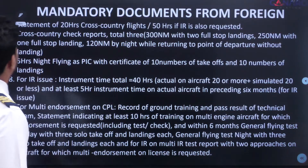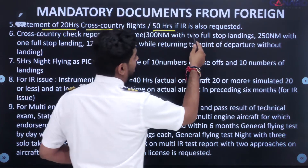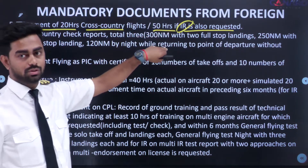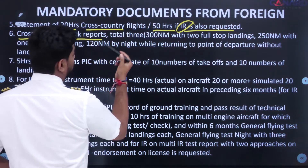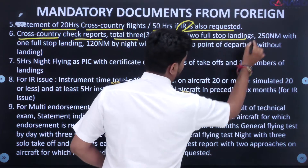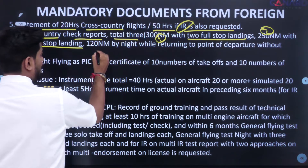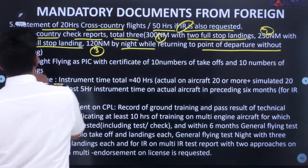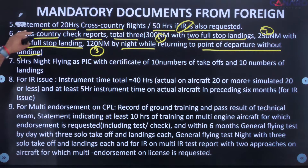Fifth is a statement of 20 hours of cross-country flying — or 50 hours if an instrument rating (IR) is also required. Sixth is cross-country check reports; there are three required: first, 300 nautical miles with two full-stop landings; second, 250 nautical miles with one full-stop landing; and third, 120 nautical miles by night while returning to the point of departure without landing. Make sure you have these three cross-country check reports.